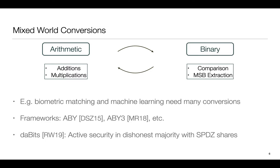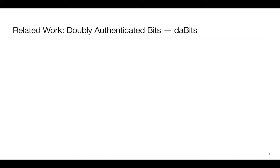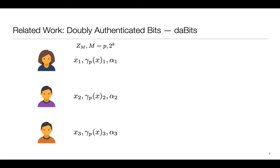Before going into our protocol let's take a look at the related work. The work of RW19 proposed an efficient way to create an object called a DABIT which is a doubly authenticated random bit sharing. A DABIT is a bit X that is shared among all the parties over ZM and F2 along with an information theoretic MAC such as SPDZ. Alpha is the key that is additively shared among all the parties and gamma XFI is the MAC that is also additively shared. For the rest of the talk I will ignore the corresponding computation on MACs for simplicity.